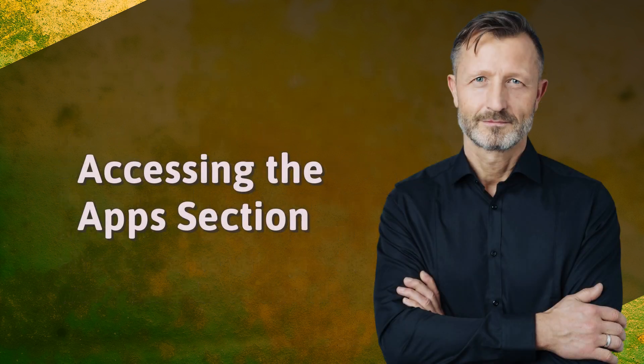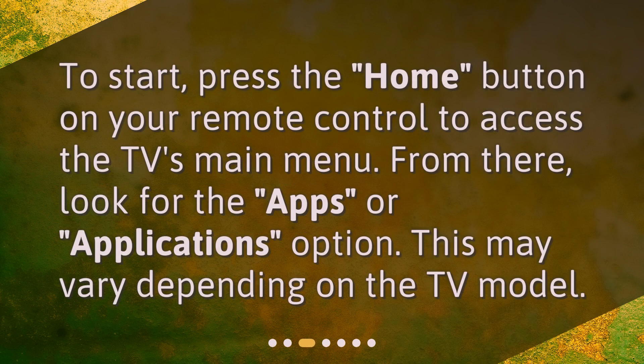Accessing the Apps section: To start, press the Home button on your remote control to access the TV's main menu. From there, look for the Apps or Applications option. This may vary depending on the TV model.